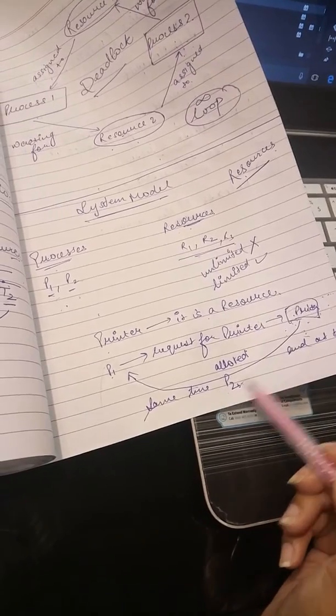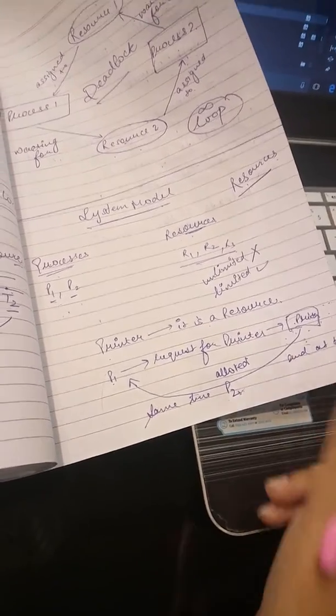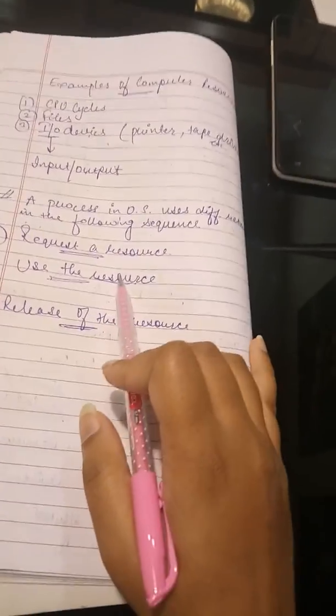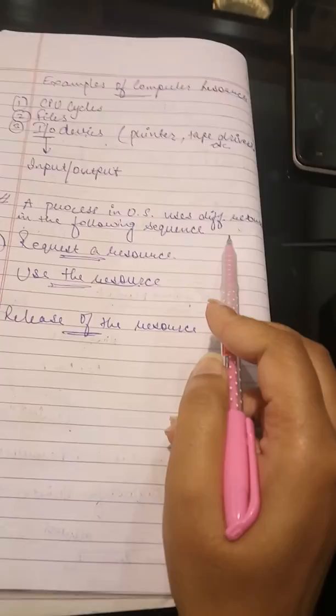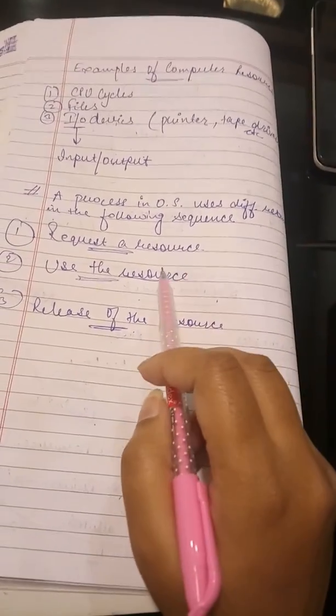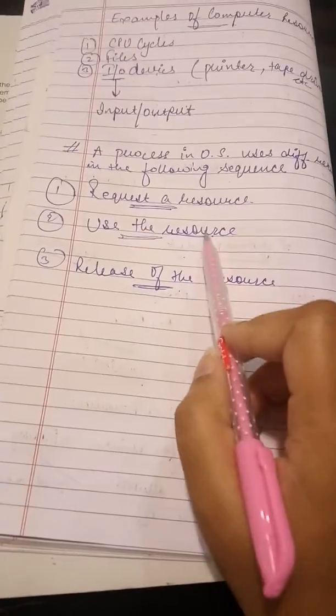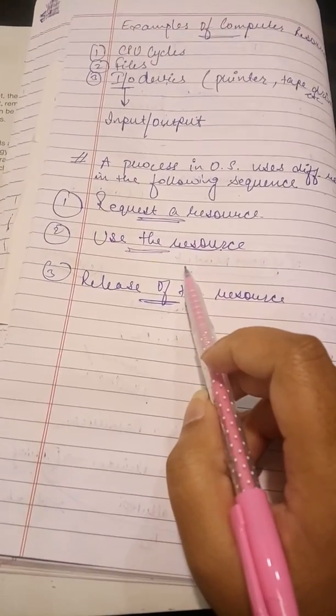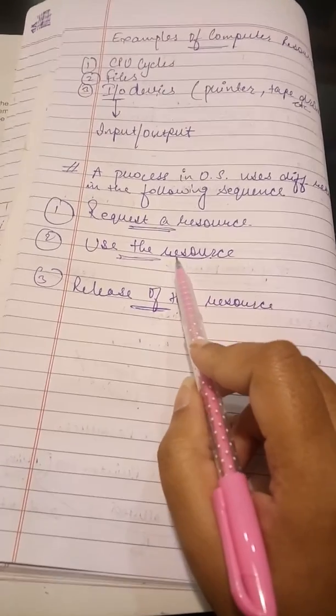So that this resource which is our printer is available for process P2 to get it because P2 already sent a request but is in waiting state because the printer wasn't available. So these are the three steps which are the sequence of how a process will be using the resources available and how this process goes is in three steps.